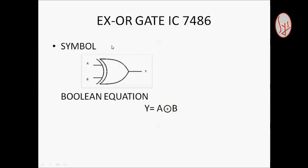Symbol of XOR gate: A and B are inputs, Y is output. Boolean equation is Y equals A under the circle addition and B.